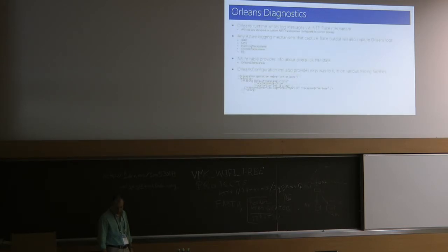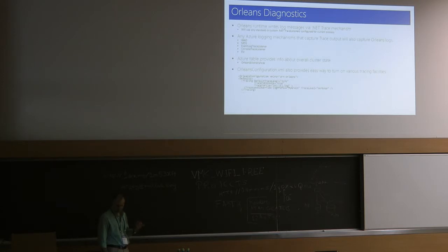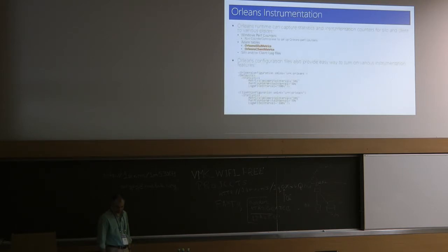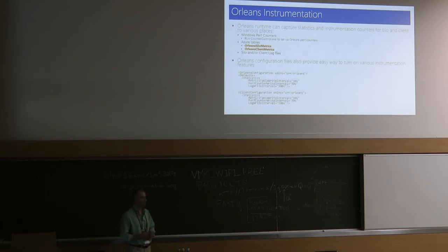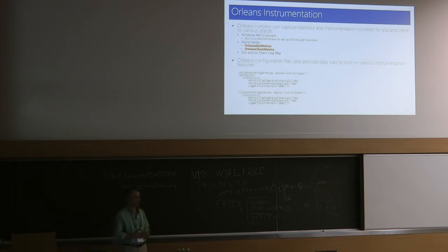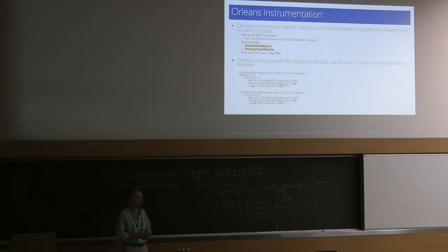There is a lot of logging internally in the system with a lot of trace information you can configure at different levels and redirect in many ways. It supports all standard log consumption methods and can log through the same trace source as the application, making debugging easier when system and application messages appear in the same place. The runtime also keeps track of 200 to 300 internal metrics written to Azure Table, helping understand throughput trends and diagnosing performance issues.